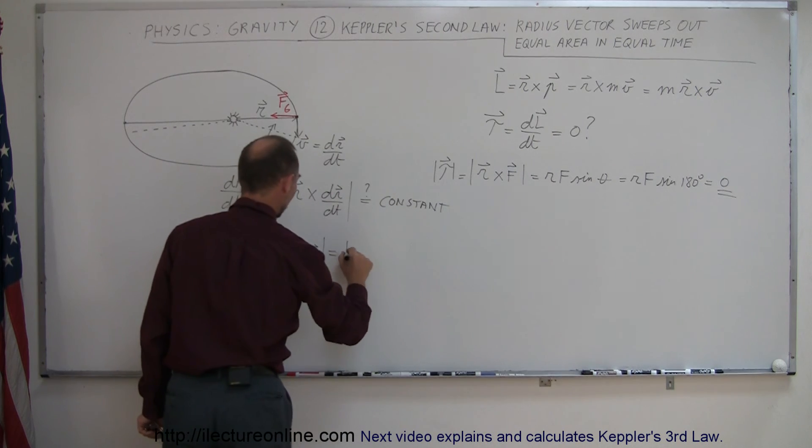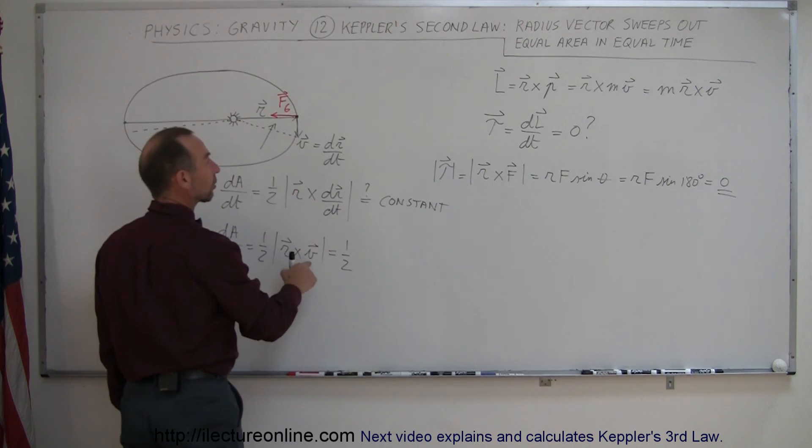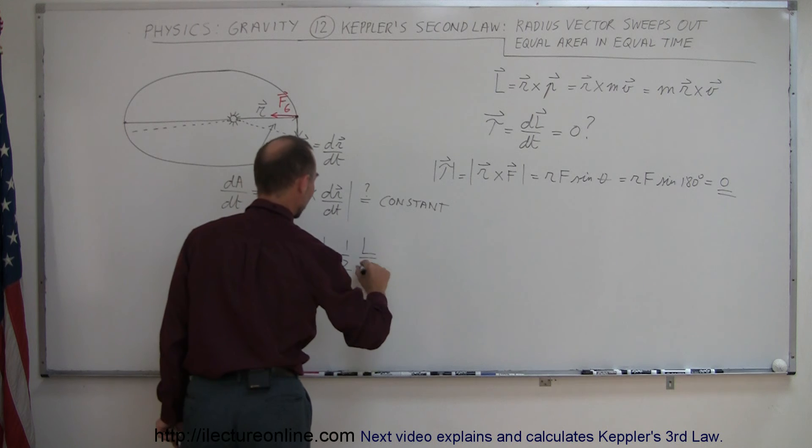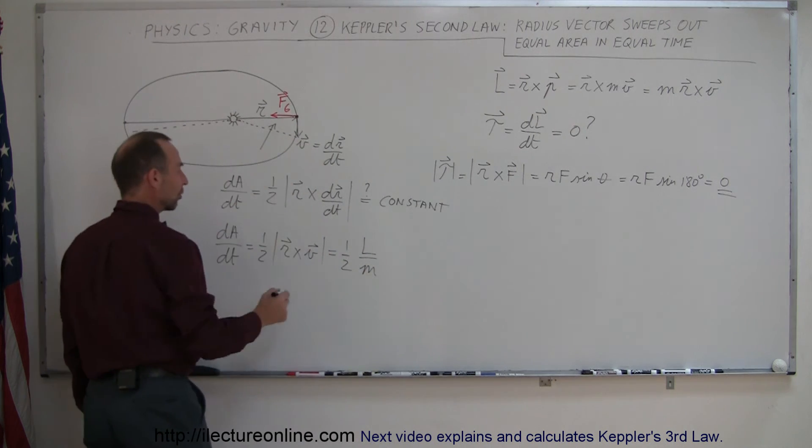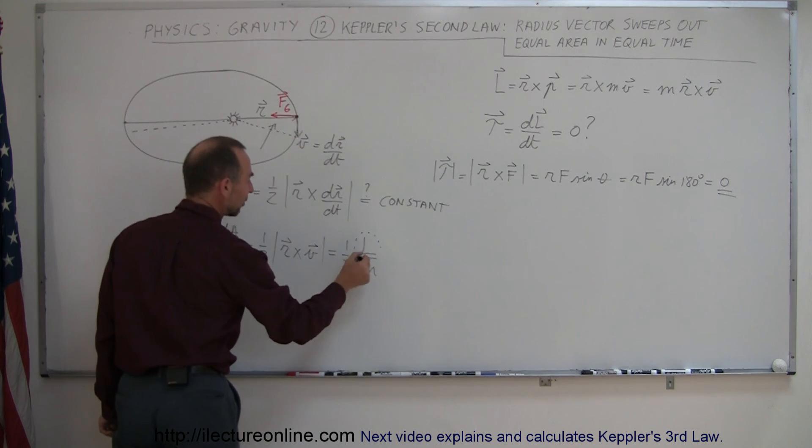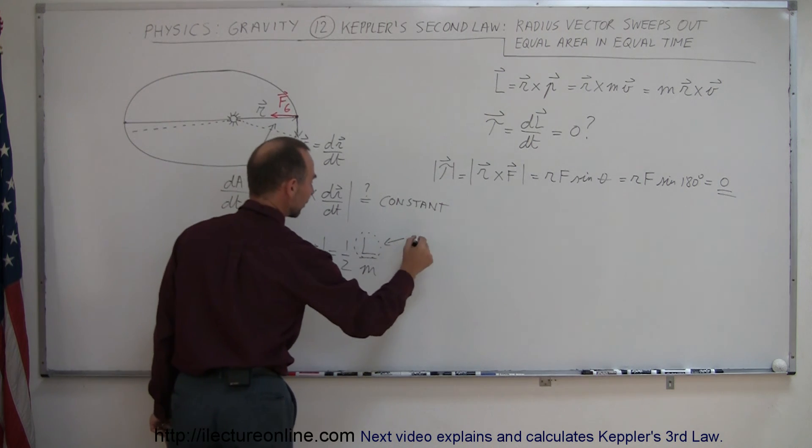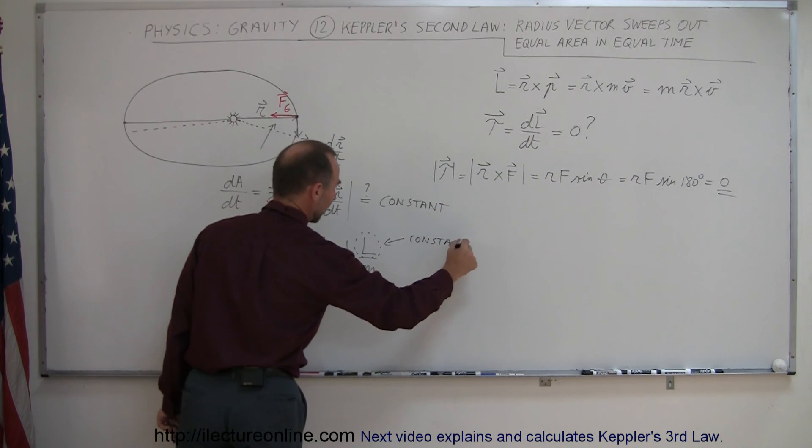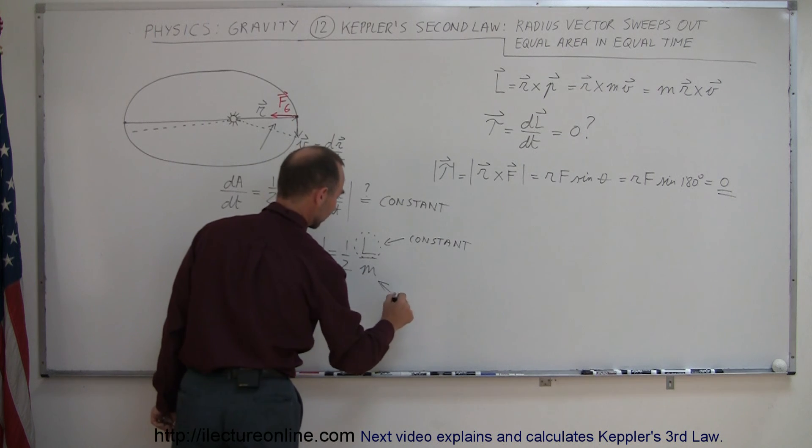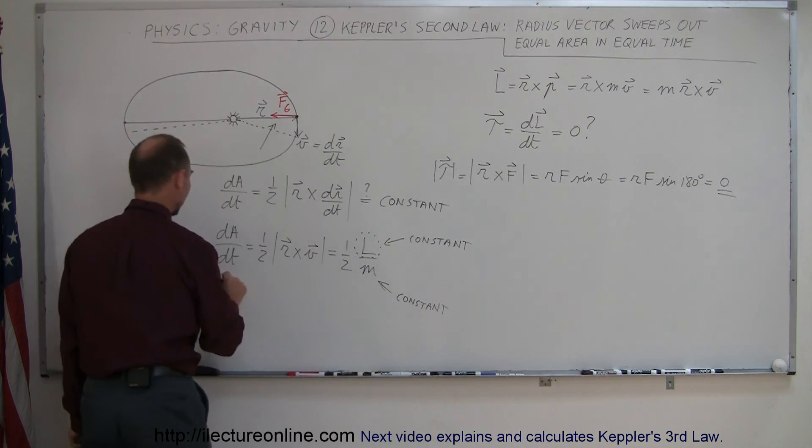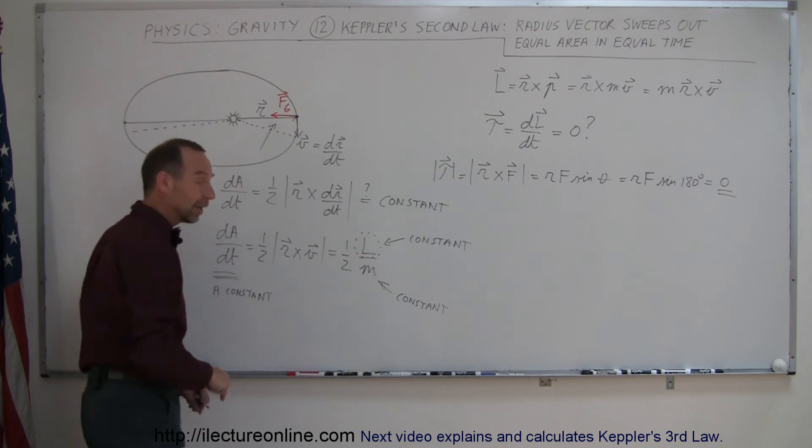And so I can say that r cross v is equal to angular momentum divided by m. So this can now be written as one half times r cross v, which is the angular momentum divided by m. And of course, since we now know that this is a constant, since this is a constant, and the mass of the Earth is a constant, we have then shown that therefore this must also be a constant.